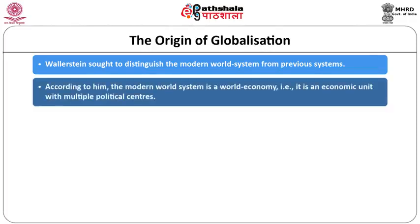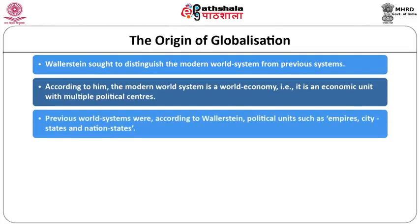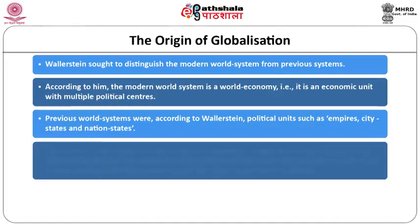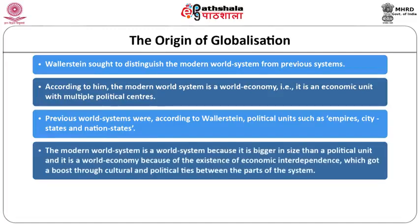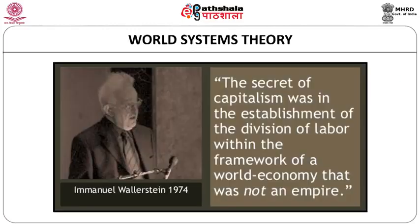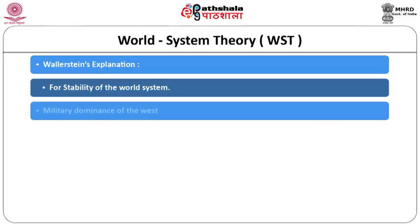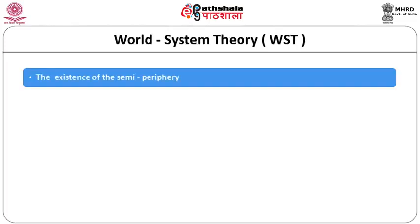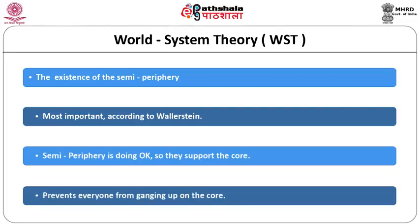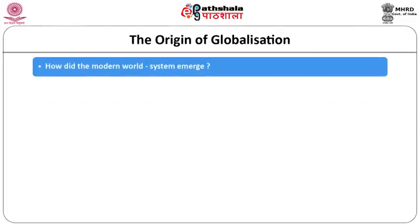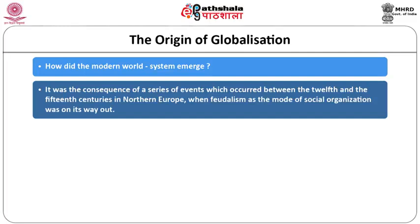Wallerstein sought to distinguish the modern world system from previous systems. The modern world system is a world economy — an economic unit with multiple political centers — whereas previous systems were political units such as empires, city-states, and nation-states. The modern world system emerged as a consequence of events between the 12th and 15th century in Northern Europe when feudalism as the mode of social organization was on its way out.